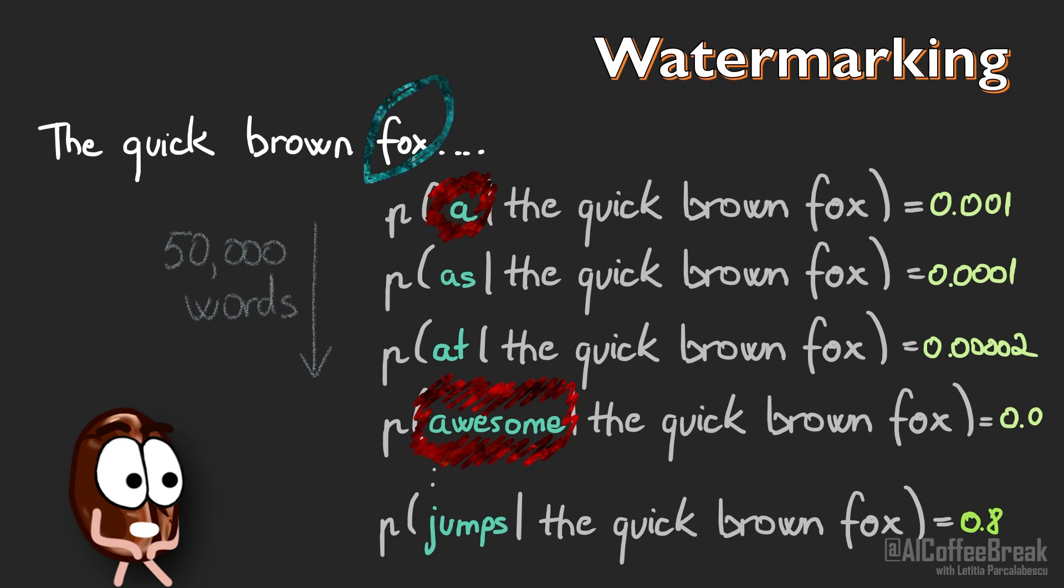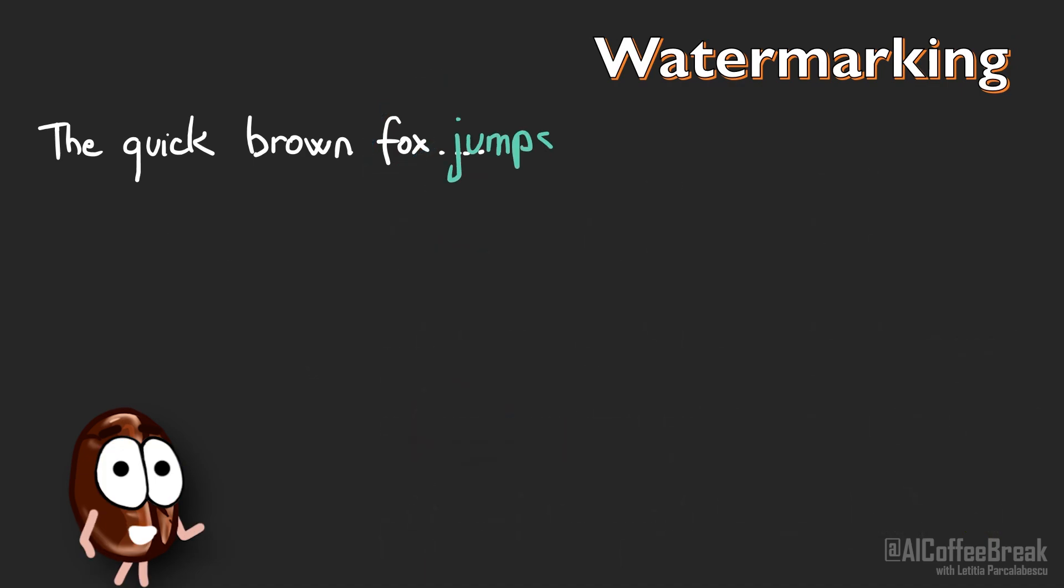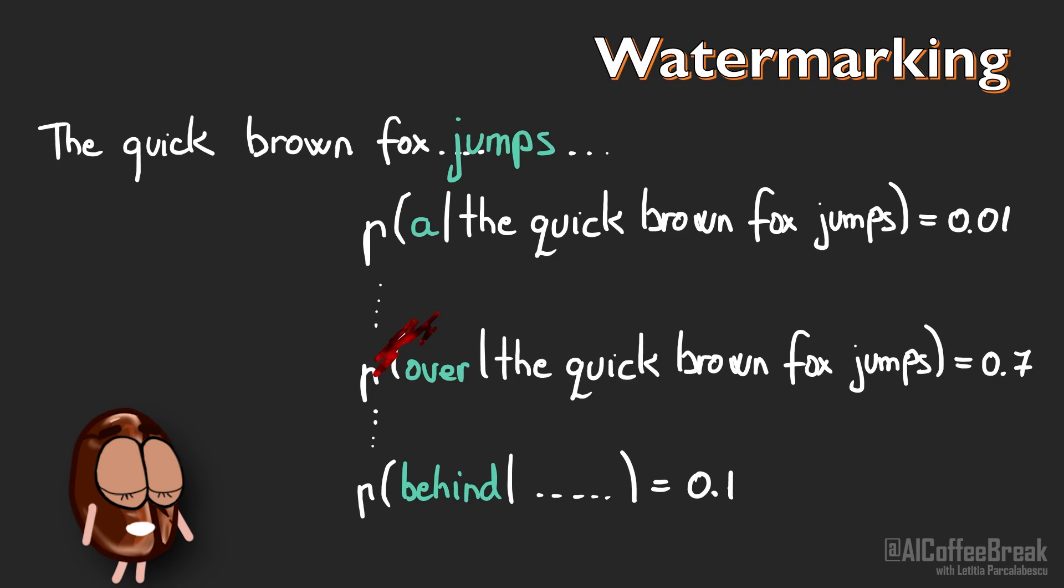The seed for the random number generator that chooses which words are blacklisted is the last word of the input. In this way, the blacklist can be reconstructed at any time. This procedure is applied at each generation of the next token, where for each next word, the last word is used as a seed for again randomly blacklisting 20% of the words in the vocabulary. So these are other blacklist words than we have used for generating the previous word.